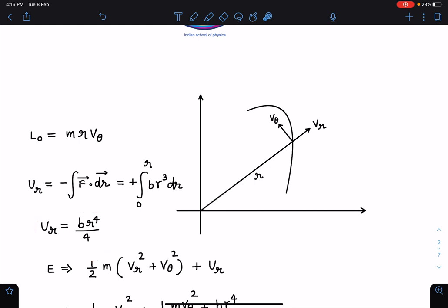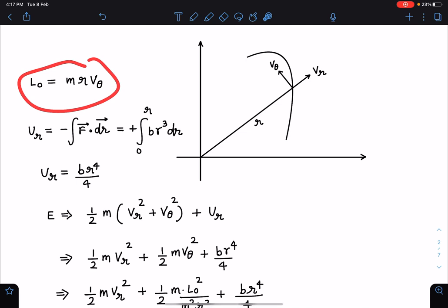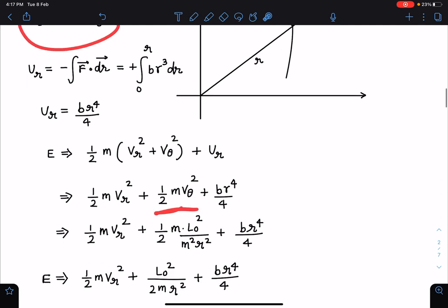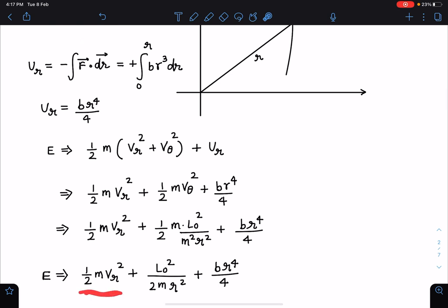When I gave this problem I made a mistake in writing the solution and that's why I was getting a factor of 4, but many students gave the correct answer. U_R is BR^4 divided by 4. When I write the total energy I can write kinetic energy plus potential energy. I can write half M times VR² plus Vθ² plus U_R. When I substitute this value of U_R and substitute this value of Vθ as well, on simplification I am getting total energy E equals half M VR² plus L²/(2MR²) plus BR^4/4.